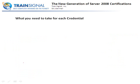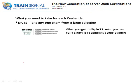Here's where we get to the details on how to make each one of these credentials happen for you. For MCTS, you take any one exam from a large selection to choose from — any one exam makes you a Microsoft Certified Technology Specialist. It essentially takes the place of the old MCP. When you get multiple MCTS certifications, you can now combine them into a single logo. I actually have five MCTS certifications.